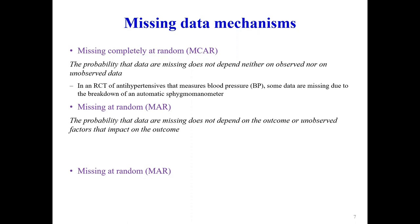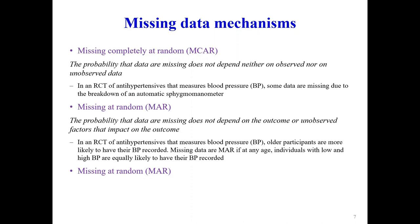Missing at random (MAR) means the probability of missingness does not depend on the outcome but depends on observed data. For example, older participants may be more likely to have their blood pressure recorded, but at any age, individuals with low or high blood pressure are equally likely to have their reading taken. Once we condition on age, missingness does not depend on the actual blood pressure values.